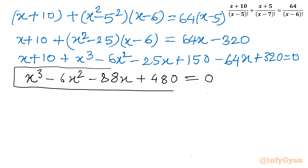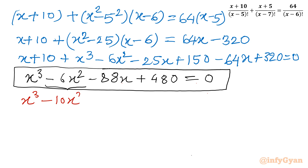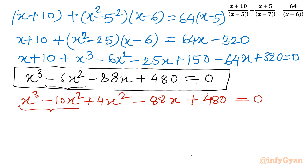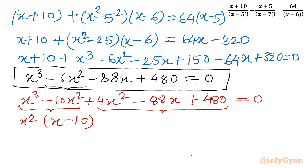I will solve this cubic using factorization. I split -6x² as -10x² + 4x², giving x³ - 10x² + 4x² - 88x + 480 = 0. Taking x² common from the first two terms gives x²(x-10), then taking 4 common from the remaining terms.